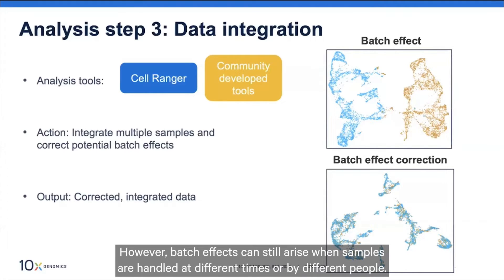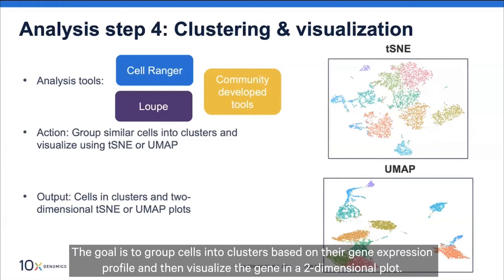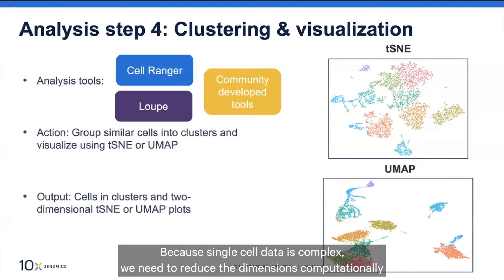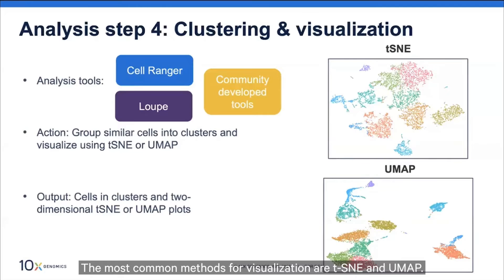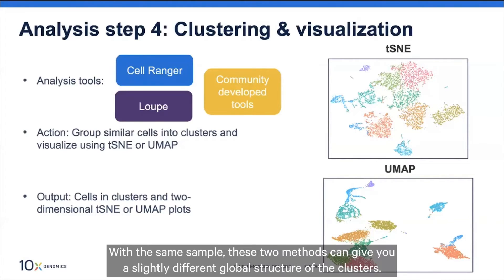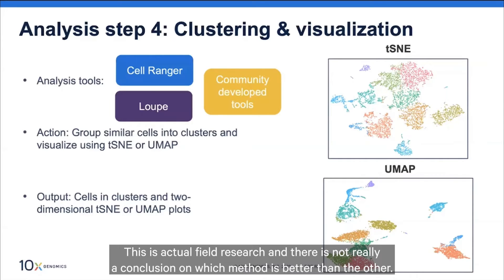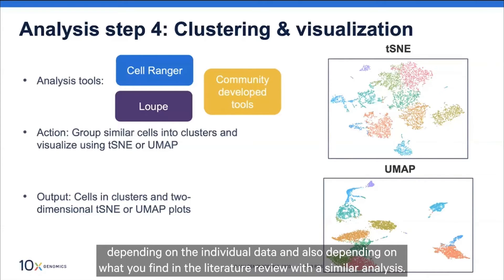Step four is clustering and visualization. The goal is to group cells into clusters based on their gene expression profiles and visualize them in a two-dimensional plot. Because single cell data is complex, we need to reduce the dimensions computationally. The most common methods for visualization are t-SNE and UMAP. With the same sample, these two methods can give slightly different global structures of the clusters. This is an active field of research, and you can choose either method depending on your data and the literature.